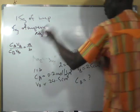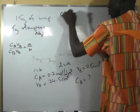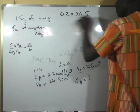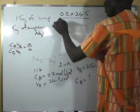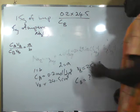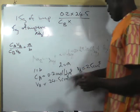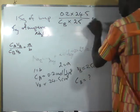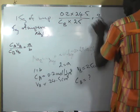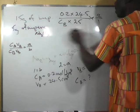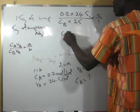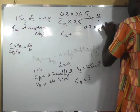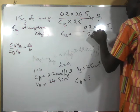Applying our formula: 0.2 × 24.5 all over Cb × 25 = a/b = 2/1. Cross-multiplying, Cb = (0.2 × 24.5) / (25 × 2).